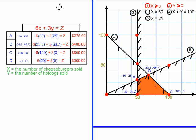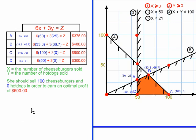Since this problem has me trying to maximize my profits, I want to choose the largest number from these four answers. And the largest number is $600. That means they should sell 100 cheeseburgers and 0 hot dogs in order to earn an optimal profit of $600.